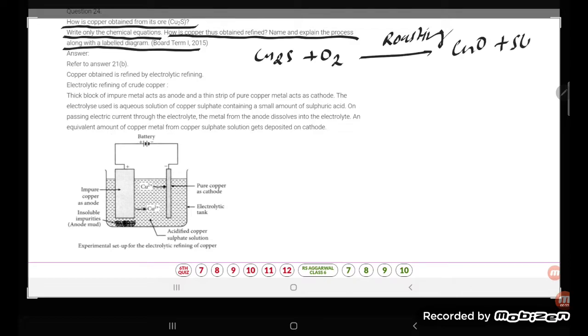So 2CuO - this is copper oxide. Now, copper is the least reactive metal, so if you are heating it, it will convert into copper plus oxygen.